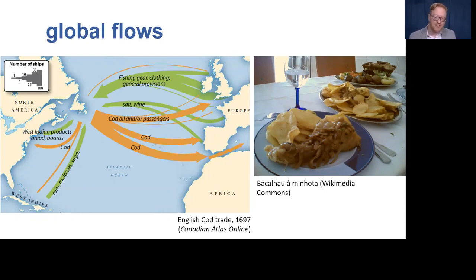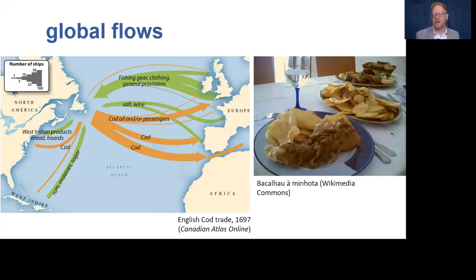This map illustrates the English cod trade in 1697 — almost all cod from what is now Atlantic Canada went to Spain, Portugal, and Italy. We have historical studies on Newfoundland and Labrador fishing communities that provide a clear indication of how these global trade relations ultimately shaped both the establishment of isolated coastal communities in Newfoundland and the emergence of a unique culture within them. As Svanberg tells us, fermented fish has recently become an important marker of localness and tradition in the Faroe Islands.